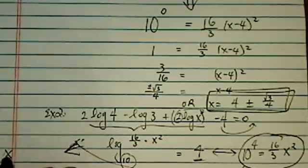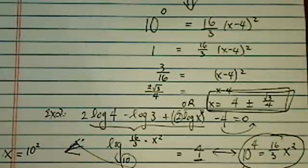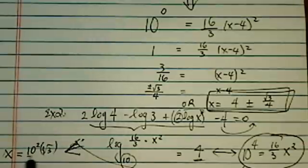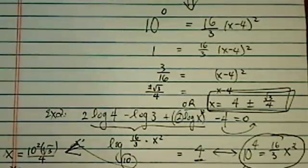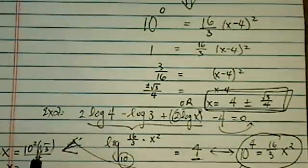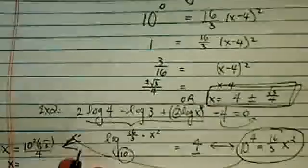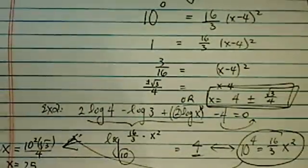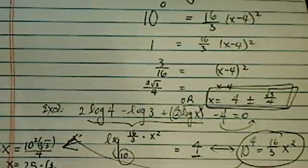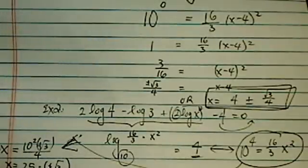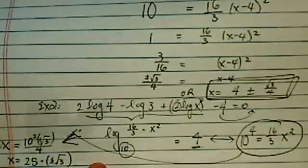Then my x is equal to, I'm going to take a radical root. This becomes 10 to the square, radical 3, plus, minus, and then divide it by 4. So x is equal to, one more step over here. So that's 25 times, plus, minus, radical 3. So that's the final answer.